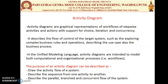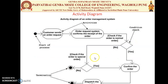Activity diagrams describe the flow of control of the target system, such as exploring complex business rules and operations, describing use cases and business processes. In UML, activity diagrams are intended to model both computational and organizational processes. Similar to a flowchart, which describes the workflow of a process, algorithm, or program, the activity diagram provides the workflow but with additional functionality.